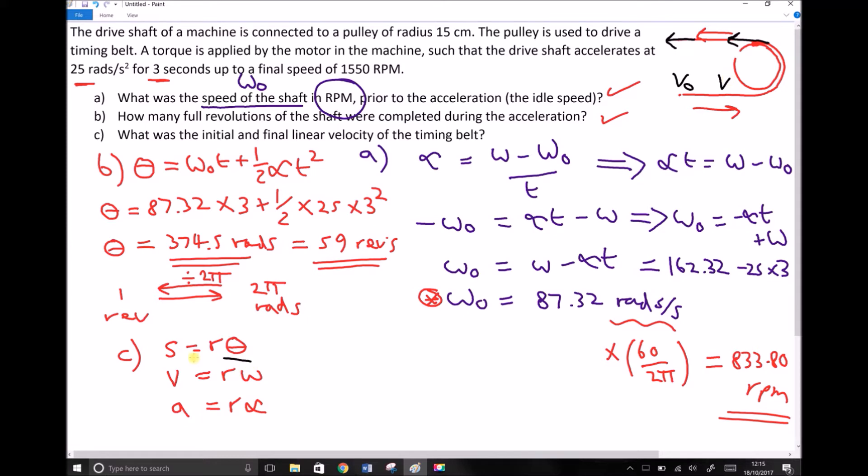So we're using our v equals r omega. And all we need to do is substitute in the corresponding values for omega in radians per second. So v zero is r omega zero. You'll recall from the question that the radius is 15 centimeters, or 0.15 meters.